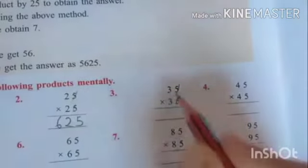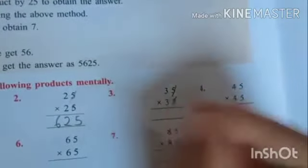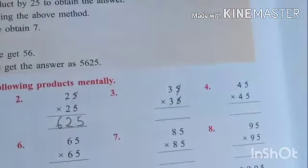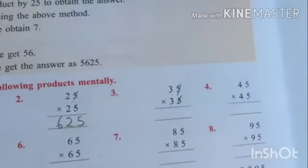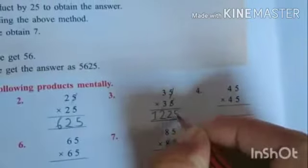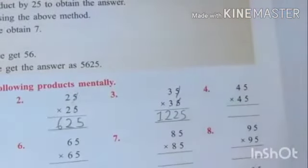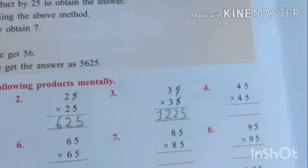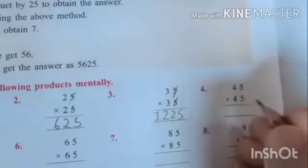Same. Cross kiya, we get 3. 3 ko multiply karna hai uski successor se, uski after number se, yuki 3, 4 ja. That is 12. Aur hume kya add karna hai? Suffix in karna hai, 25. That is 1, 2, 2, 5. We get 1225.